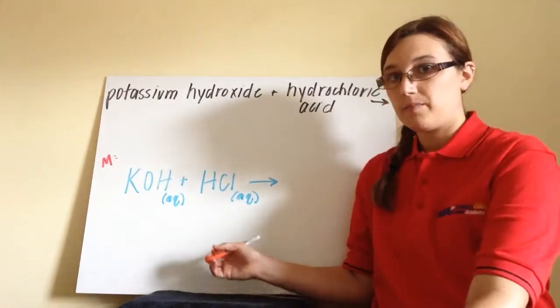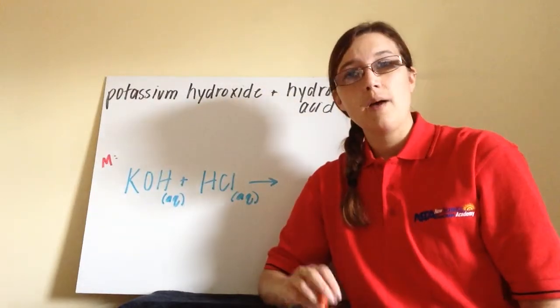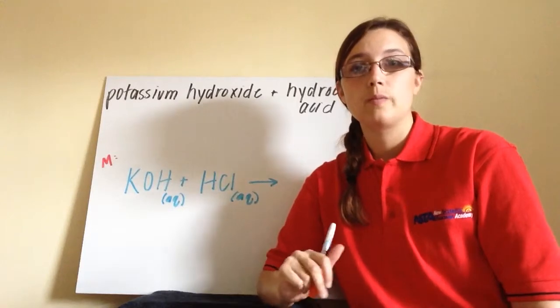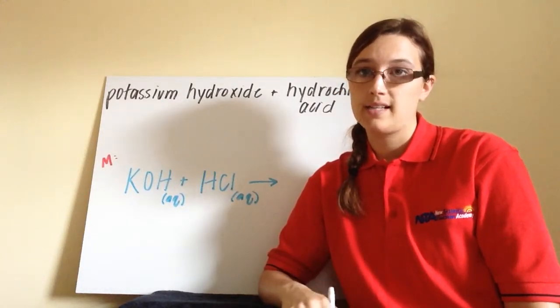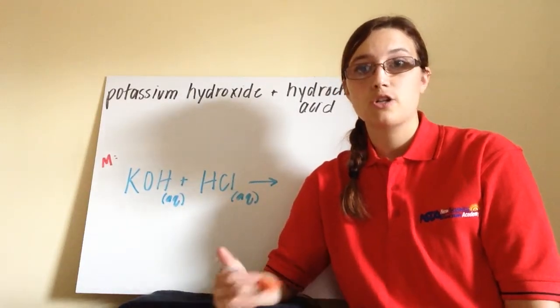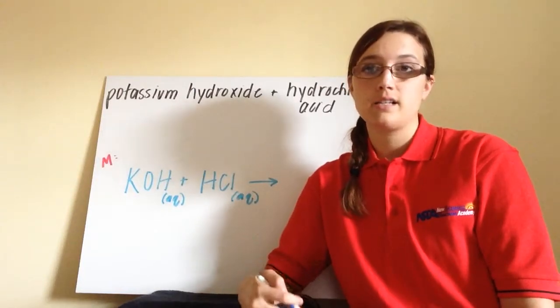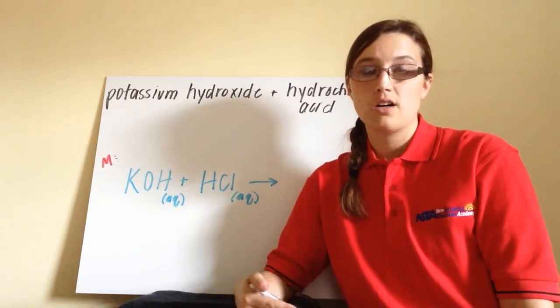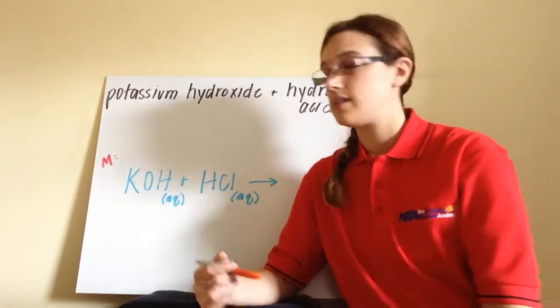Hydrochloric acid is aqueous not because of looking at solubility rules, but because of what you should know about strong and weak acids. HCl is a strong acid. Strong acids and strong bases are strong electrolytes, so they are aqueous.